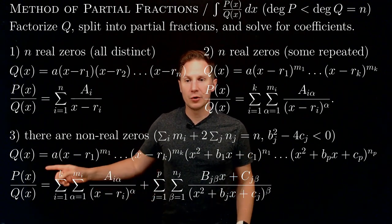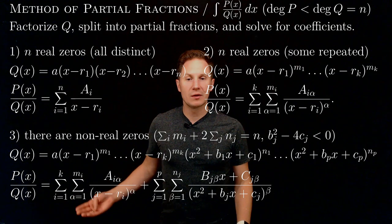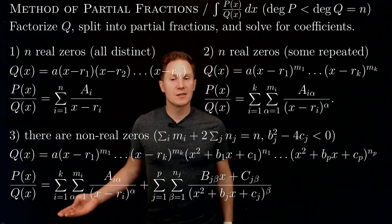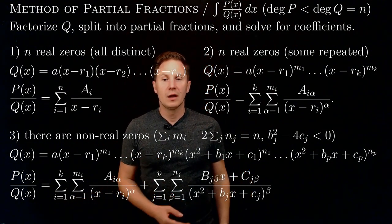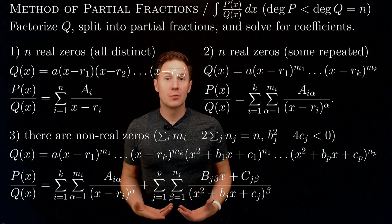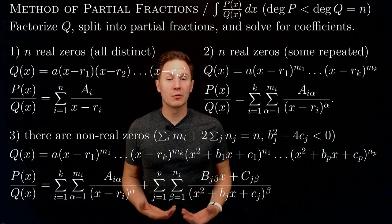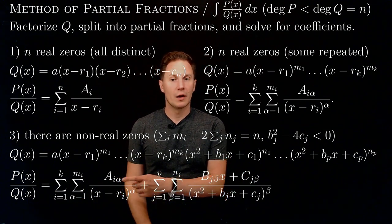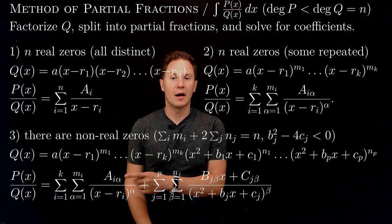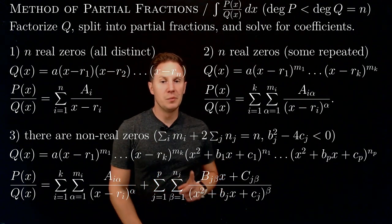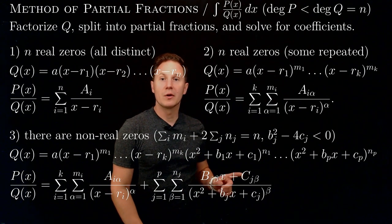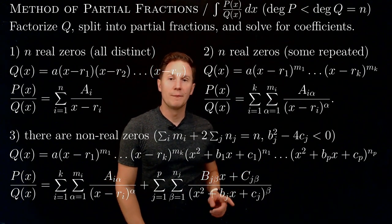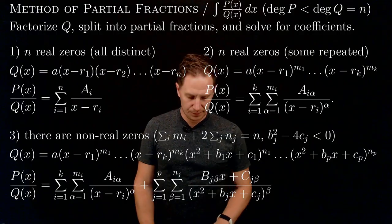The total degree of the polynomial on the right-hand side should still be n, the degree of q. In this case, p over q can be written as the sum of these partial fractions, each of which we know how to integrate once we have the coefficients a sub i alpha, b sub j beta, and c sub j beta.